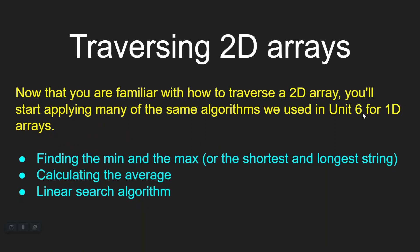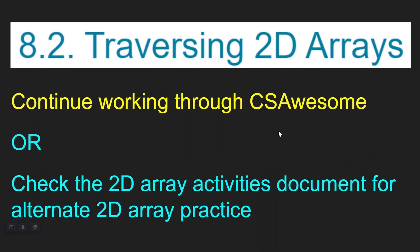Now that you're familiar with how to traverse a two-dimensional array, you'll start applying many of the same algorithms from Unit 6 for one-dimensional arrays — things like finding the min and max, the shortest and longest string, calculating the average, and performing a linear search. We just need to adjust our syntax for two-dimensional arrays. With that, you are good to go. You can start your CS Awesome activities for Lesson 2, or check the 2D array activities document for alternate practice. Thanks for watching, and I'll see you in class.